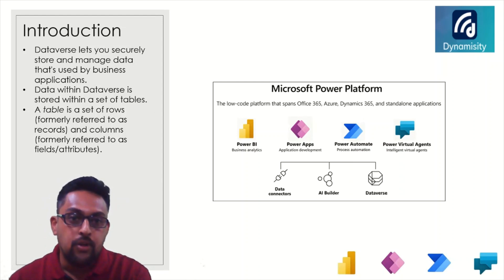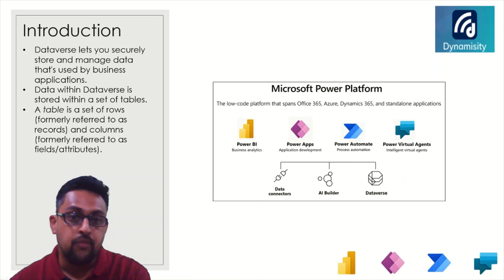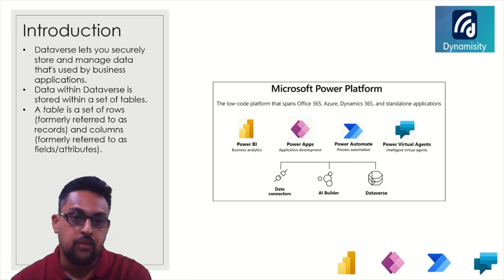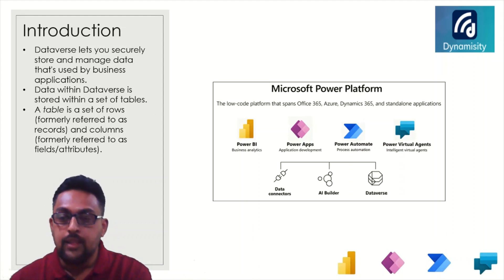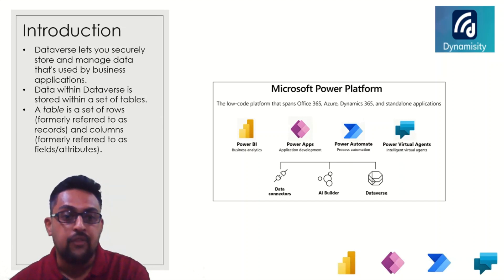How do we want to talk about Dataverse? It lets you securely store and manage your data used by your business applications, and it is stored within a set of tables. A table is a set of rows — formally referred to as records — and columns, formally referred to as fields and attributes. That's what Power Platform is capable of doing for us: it is the low-code platform that allows us to move around our data in a very effective way.